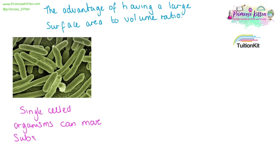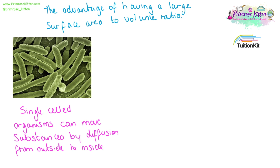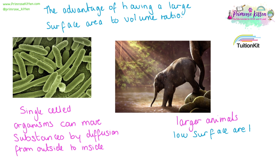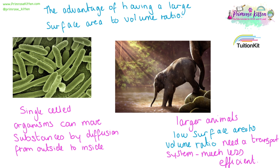Small things, such as single cell organisms, can move substances quickly — they can diffuse from the outside to the inside where they are needed in a relatively short period of time. Larger animals have a low surface area to volume ratio, meaning that it takes a very long time for water to get from the outside to the inside of the cells where it is going to be needed. They need a mass transport system to help, which is much less efficient than simply diffusing a very short distance.